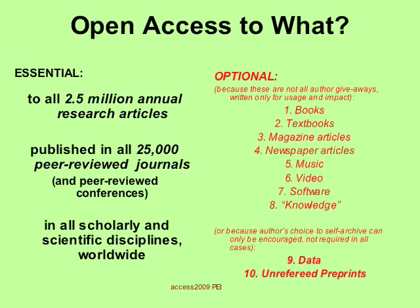Open access to what? The primary target is the 2.5 million articles published every year in 25,000 peer-reviewed journals in all disciplines. Those are, without exception, author giveaways written only for usage and impact, not for royalties.